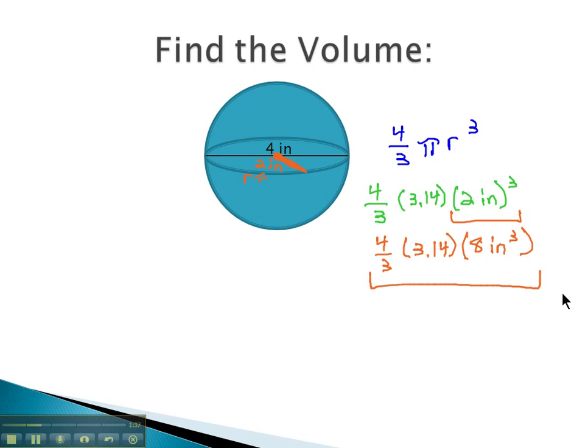And then we just have this big multiplication and division problem left, which we can type in our calculators. 4 divided by 3, times 3.14, times 8, gives us our final volume of 33.5 after rounding, inches cubed.